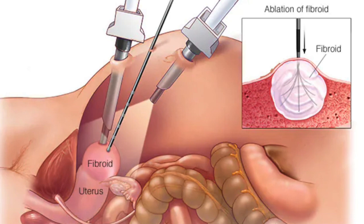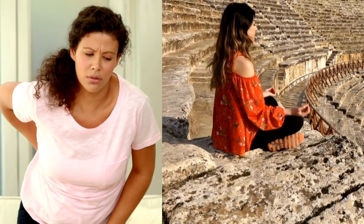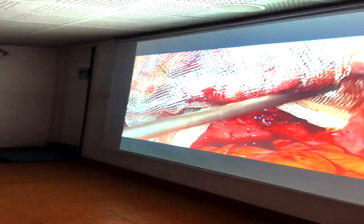Treatment of fibroid degeneration usually depends on the type and severity of the degeneration as well as the woman's age and her overall health. The two options available for fibroid degeneration include pain management medication and surgery.